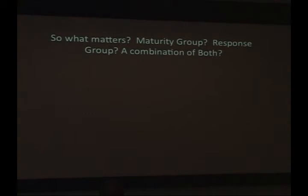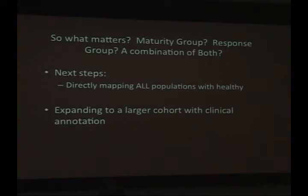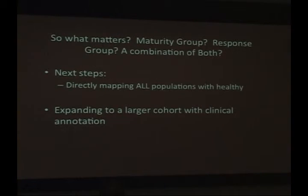The questions we're left with are: what matters — is it where the cells are in maturity, how they respond to a drug, how they signal basally, or some combination? With this dataset we can't know because it's a very small dataset and we don't have clinical outcome data, and even if we did it wouldn't be powered to answer that question. The next steps are expanding the cohort with clinical annotation, and directly mapping ALL populations to the healthy, which is difficult because the cells of origin are exceedingly rare in healthy bone marrow and you need to measure many more cells to align them directly.